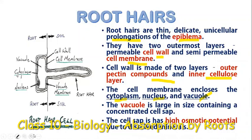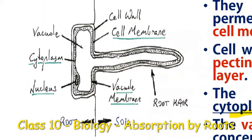If you see the structure of the root hairs, we can see the cell wall followed by the cell membrane. The maximum portion of the root hair is occupied by the vacuole; the cytoplasm and the nucleus are pushed towards the periphery.